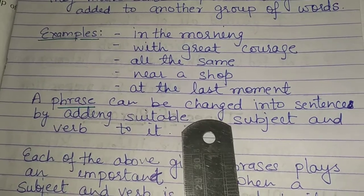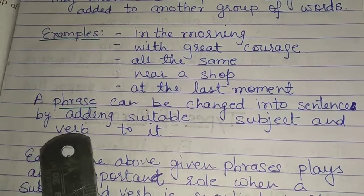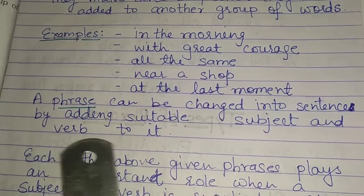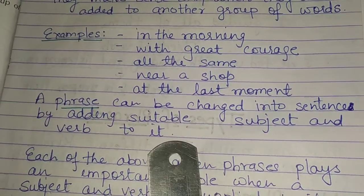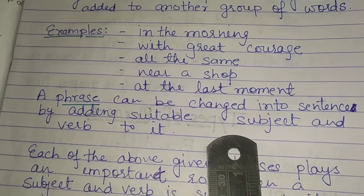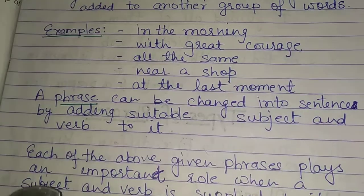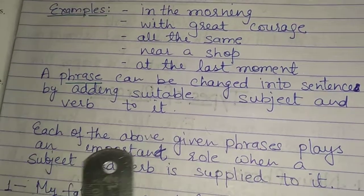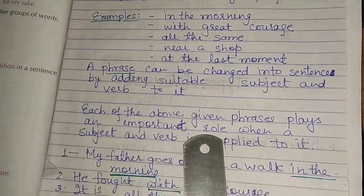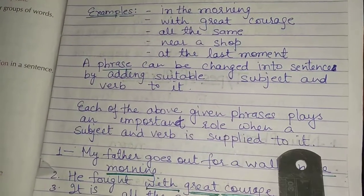A phrase can be changed into a sentence by adding a suitable subject and verb to it. When we add a subject and verb to the phrase, then it becomes a complete sentence. Each of the above given phrases plays an important role when a subject and verb is supplied to it.